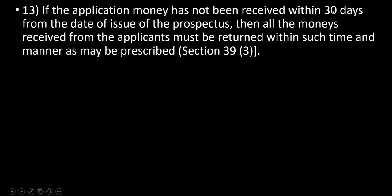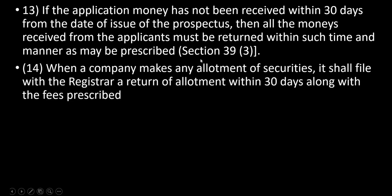If the application money has not been received within 30 days from the date of issue of the prospectus, then all the money received from the applicants must be returned within such time and manner as may be prescribed. When applications are cleared, the next stage is allotment. When a company makes any allotment of securities, it shall file a return of allotment within 30 days along with the prescribed fees.